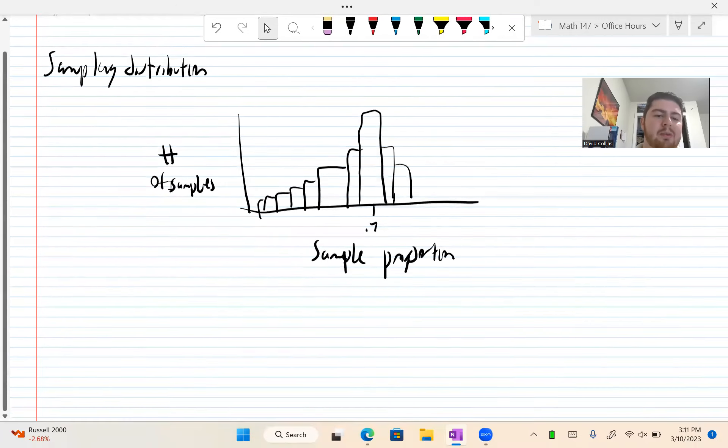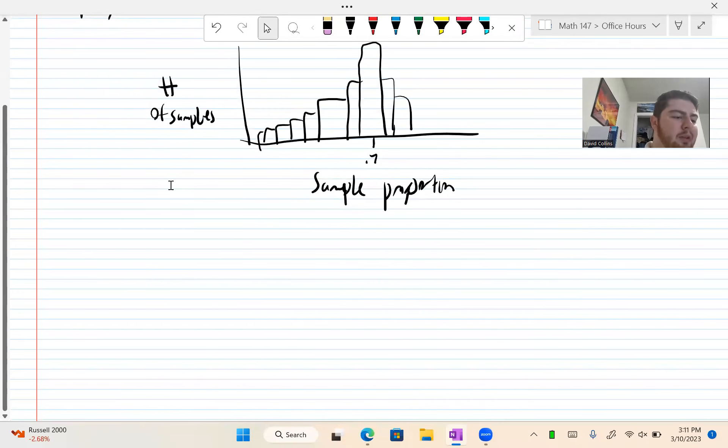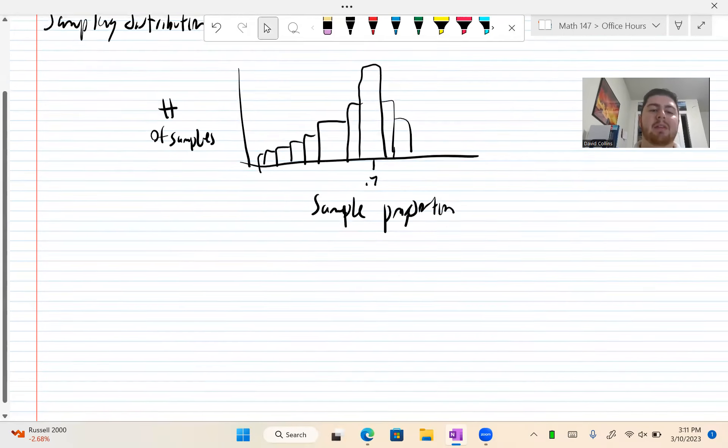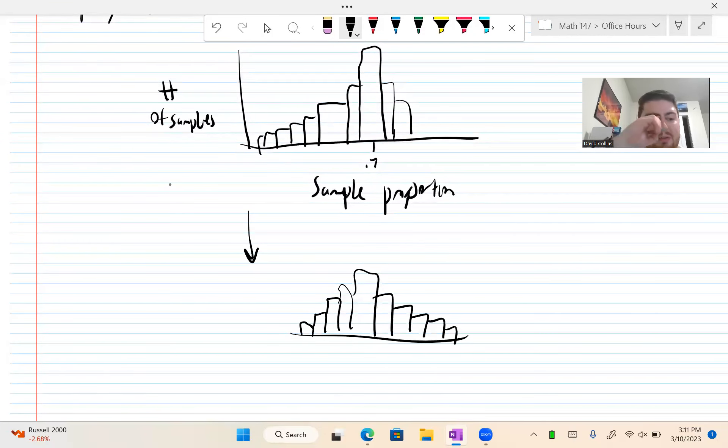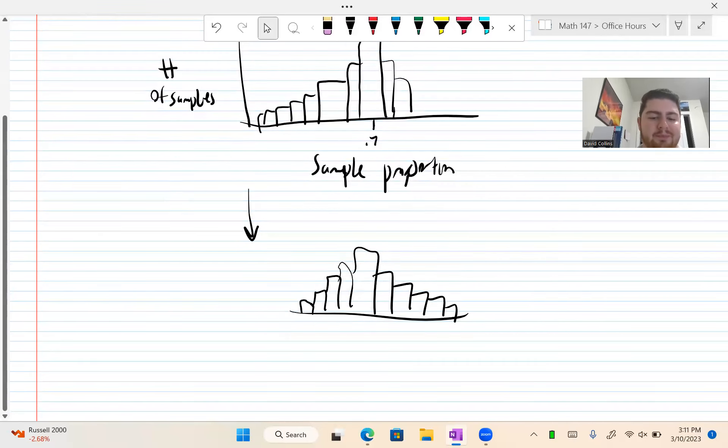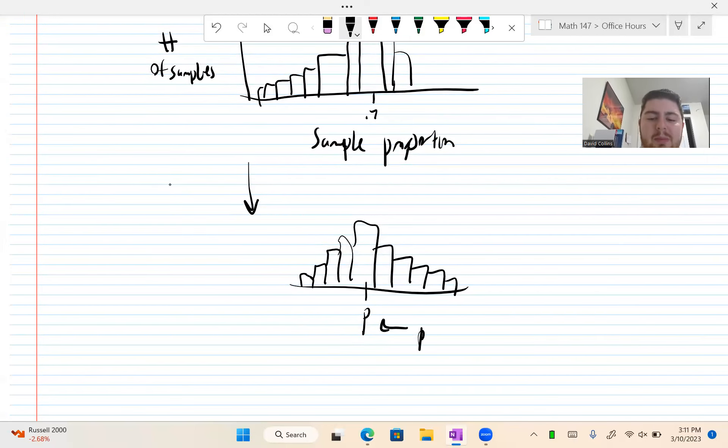But as we increase sample size and the number of samples, this turns into a really nice unimodal and symmetric histogram. This approaches our population proportion with the same y-axis number of samples. So this is called the sampling distribution.